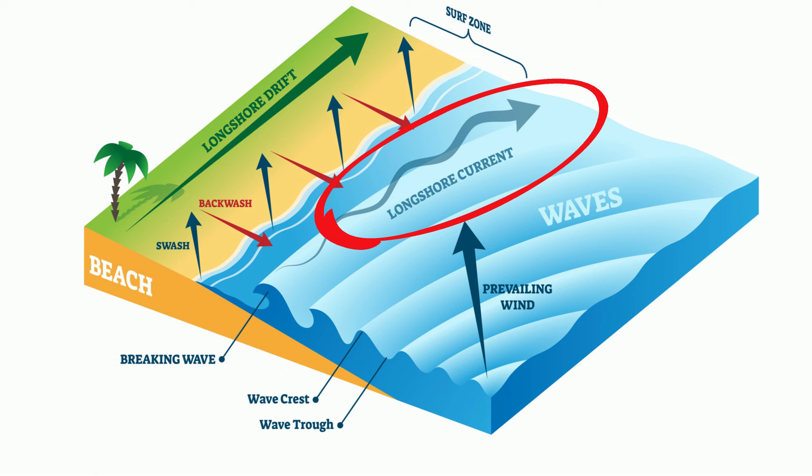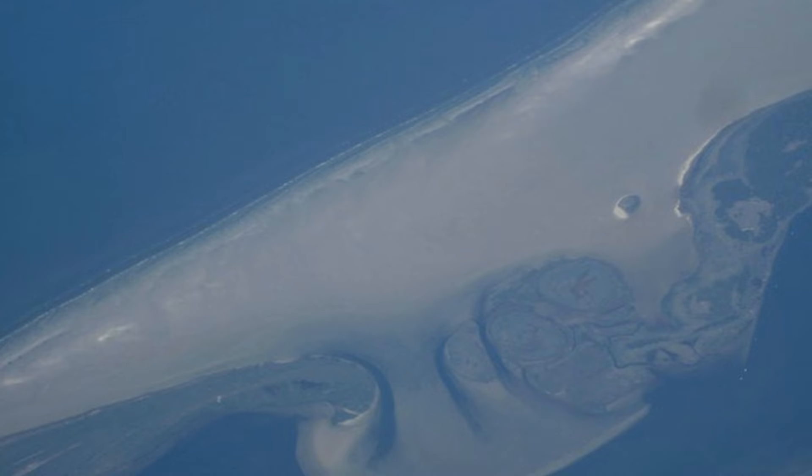A longshore current is a result of how the waves strike the beach. Most waves approach the beach at a slight angle and retreat perpendicular. This action creates longshore currents that move in a direction parallel to the shore. These longshore currents can transport and deposit materials offshore and may, over a period of time, create a landform offshore like a barrier island.